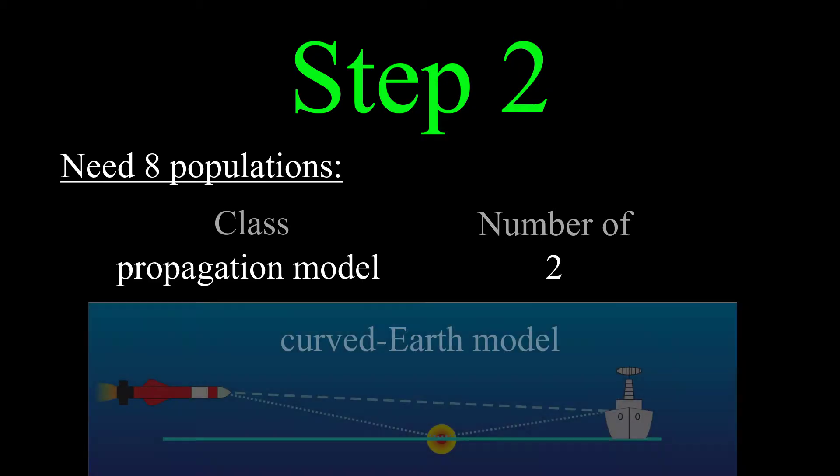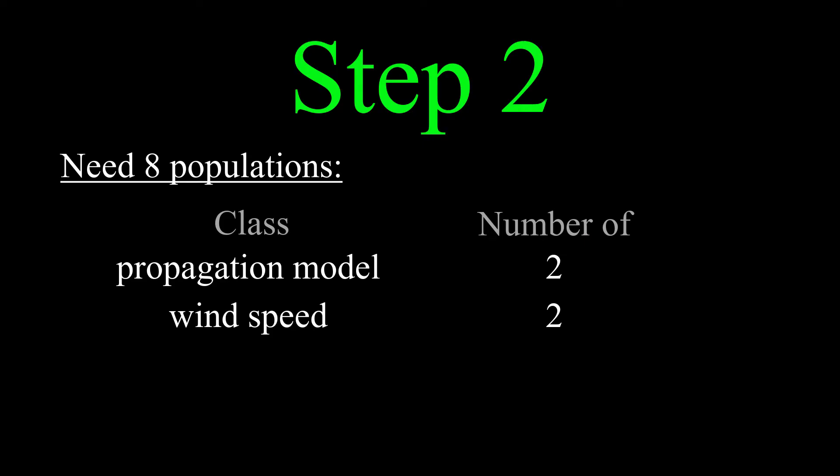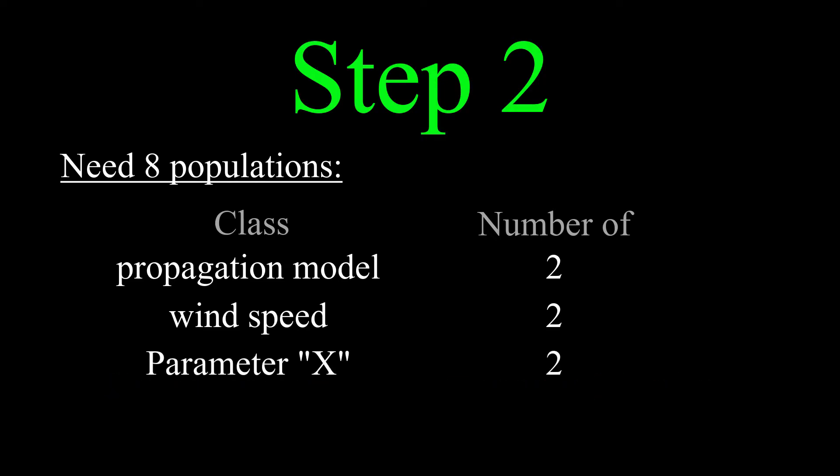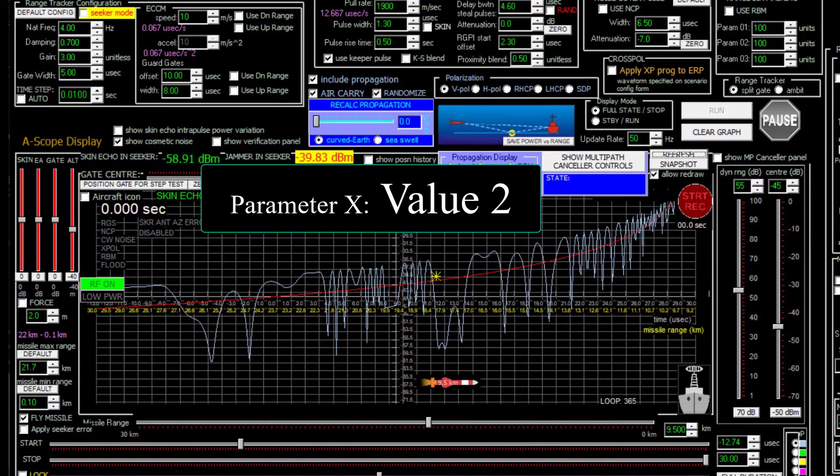So we're not done step two yet, we need eight populations of runs, one for all the possible combinations of the following conditions. We need two propagation models, so let's say a simple curved earth model and a sea swell model. And we need two values of wind speed, let's say zero meters per second and 10 meters per second. And two paired values of what I'll call parameter X for realistic propagation. And two cubed makes eight populations.